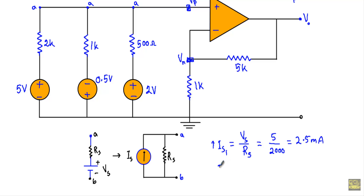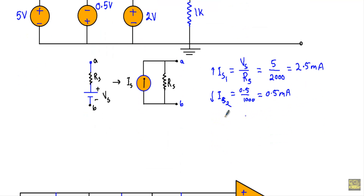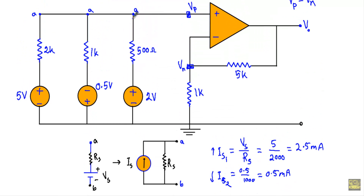IS2 equals 0.5 V divided by 1 kΩ (1000 Ω), giving 0.5 mA. The 0.5-volt source draws current away from the non-inverting terminal, so IS2 is directed downward. IS3 equals 2 V divided by 500 Ω, giving 4 mA. The 2-volt source supplies current at the non-inverting terminal from the positive terminal, so IS3 is directed upward.